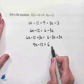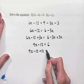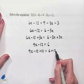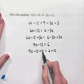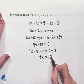Now we're going to add 12 to both sides of the equation. 9x minus 12 plus 12 equals 6 plus 12. On the left-hand side, the 12 subtract out, leaving us with 9x. On the right-hand side, 6 plus 12 is 18.